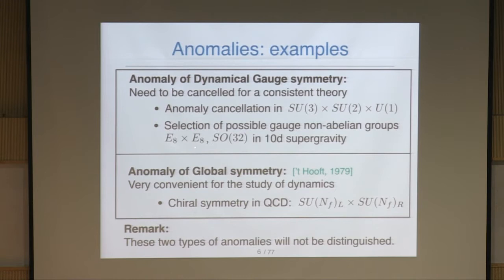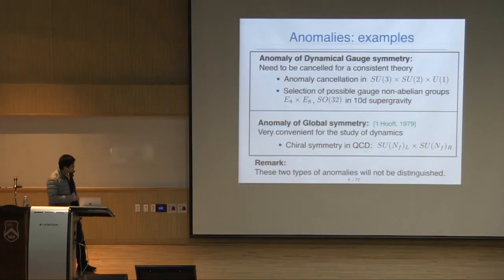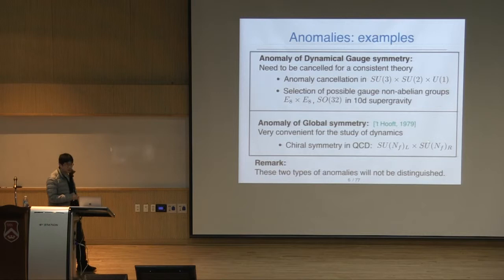In string theory, anomalies are important for the selection of possible gauge groups — E8 × E8 and SO(32) in 10-dimensional supergravity. Anomalies are also important for global symmetries. Anomalies of global symmetries need not be cancelled — they can be non-zero — but they are very useful for the study of strong dynamics. This was originally discussed by 't Hooft, who considered chiral symmetry in QCD. In the massless limit of quarks, QCD has chiral symmetries SU(N_F)_L × SU(N_F)_R, and 't Hooft found that the anomaly of these chiral symmetries is very convenient.